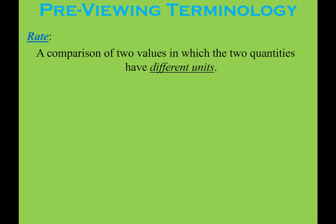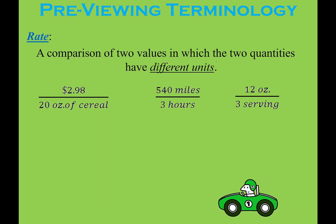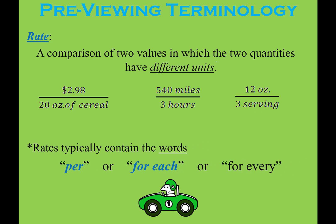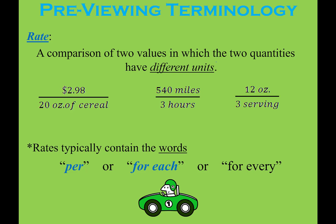Some basic vocabulary we need to understand how to structure equations is the idea of a rate. A rate is a comparison of two different things — typically they'll have different units. You're used to seeing lots of different rates in real life: a box of cereal that's $2.98 per 20 ounces of cereal, miles per hour, price per gallon when you fill up your car with gasoline, or ounces per serving. A rate typically contains the words per, for each, or for every, and that helps you recognize those types of numbers within the application problem.